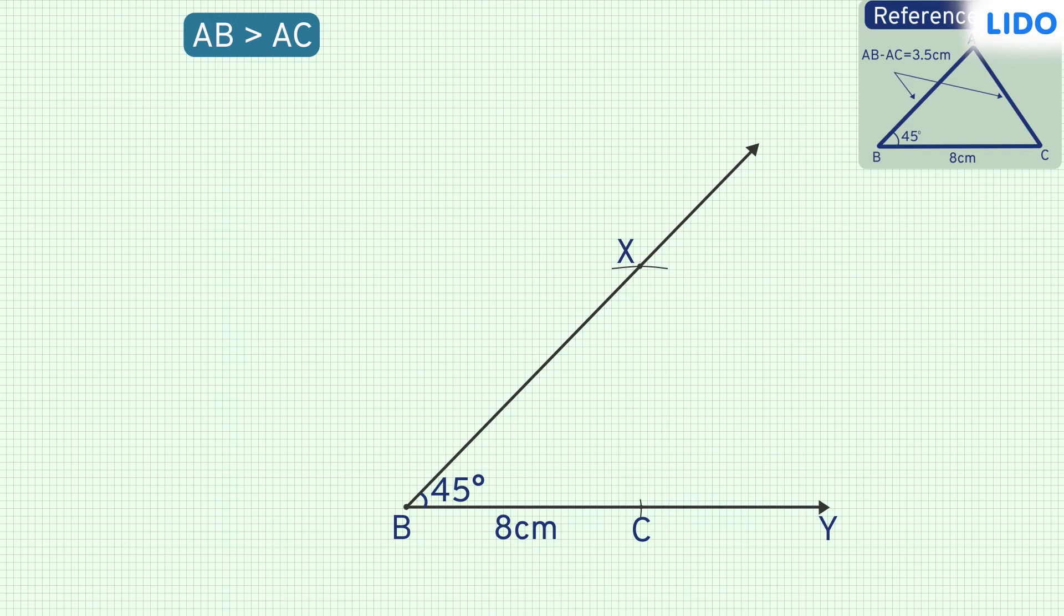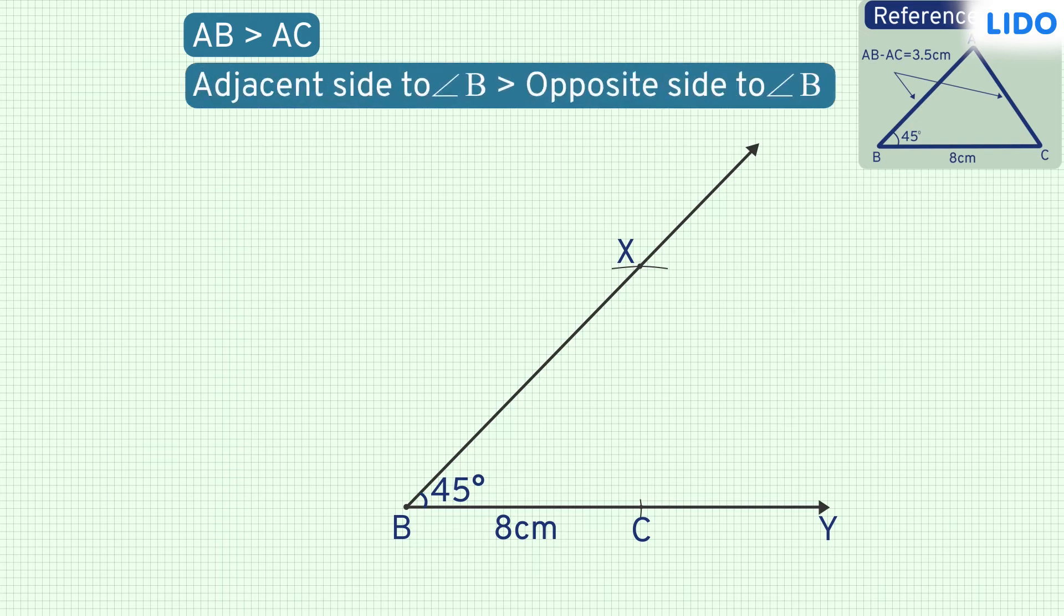AB is the side of the triangle that contains angle B, which is one of the base angles given. AC is the side that is opposite to angle B. Here, the adjacent side is greater than the opposite side.